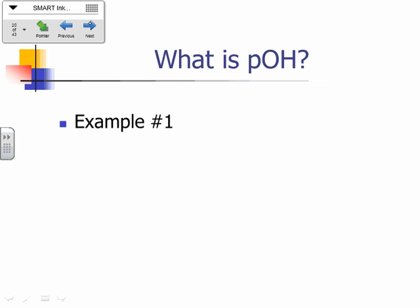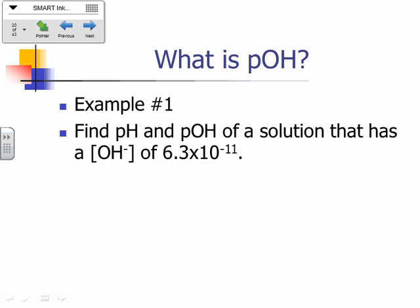It turns out if you add the pH and the pOH together, it always equals 14, okay? So if you know one, you can figure out the other. So if I have a pH, if my solution has a pH of 7, then what's the pOH? 7, because it has to add up to 14, okay? If it has a pH of 5, then it would have a pOH of 9, okay? See how that works? It just, it always adds up to 14. Okay, so here's an example. Find the pH and the pOH of a solution that has an OH minus concentration of 6.3 times 10 to the negative 11. Okay, well, what do we want to start with? pH or pOH?